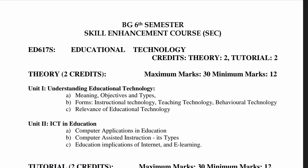Credit is 4, tutorial 2, maximum marks for theory portion is 30 and minimum marks for theory portion is 12. The course content of theory portion: Unit 1 is 'Understanding Educational Technology', in which you have to study — A: meaning, objectives and types of educational technology; B: forms of educational technology, that is instructional technology, teaching technology, behavioral technology.